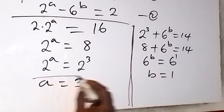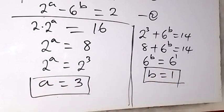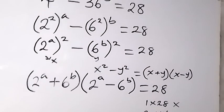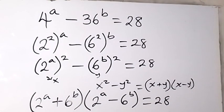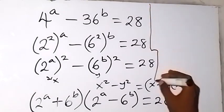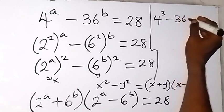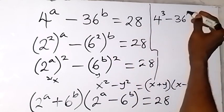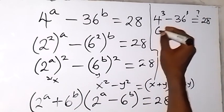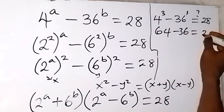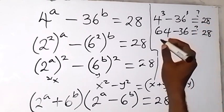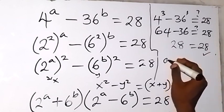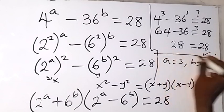So we got a equals 3 and b equals 1. We can check whether our answer satisfies the original equation. We are given 4 raised to power a minus 36 raised to power b equals 28. Substituting: 4 raised to power 3 minus 36 raised to power 1 gives 64 minus 36, which equals 28. This confirms our answer. Therefore, the solutions are a equals 3 and b equals 1. This is the end of the solution.